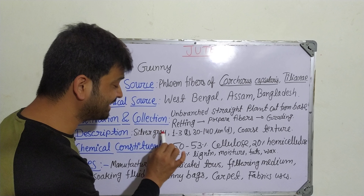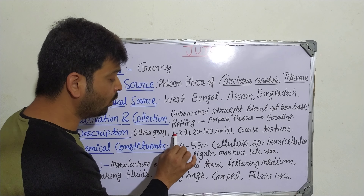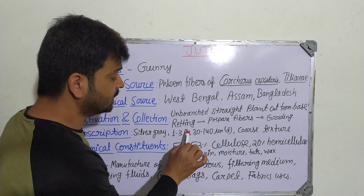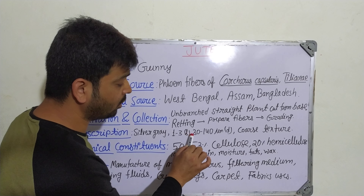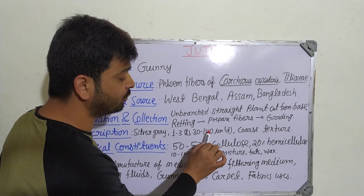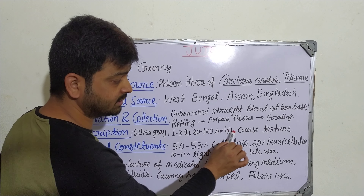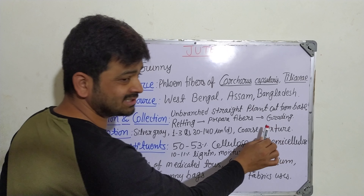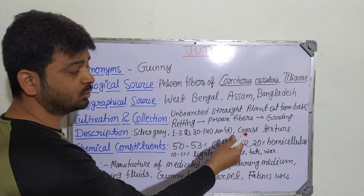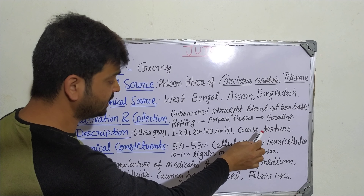It is silver gray in color, 1 to 3 centimeters long, and 30 to 140 micrometers in diameter. It has a coarse texture.